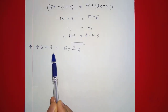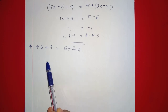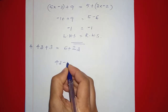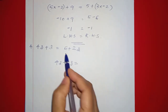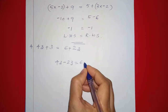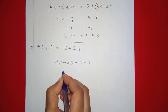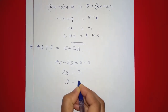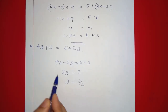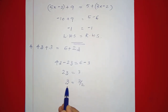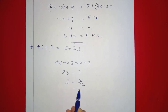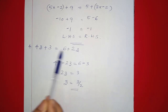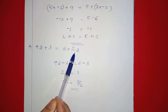Next: 4z plus 3 is equal to 6 plus 2z. We collect z terms: 4z minus 2z equals 6 minus 3, so 2z equals 3, which implies z equals 3 by 2. Now we check by substituting z equals 3 by 2 into the right-hand side and left-hand side to confirm they are equal.